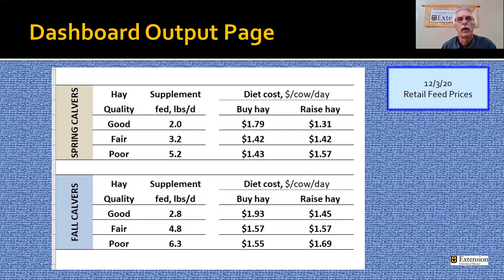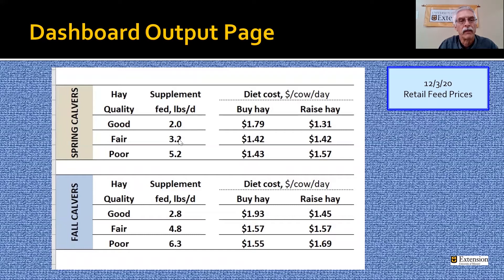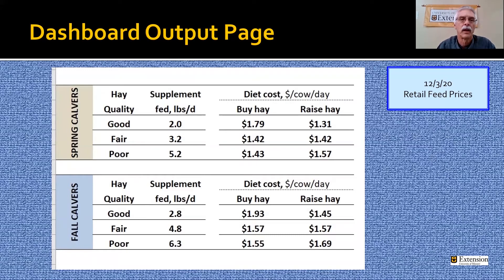This is the output page, and this is what we're really looking at. First, let's look at spring calvers here on the top. The supplement fed per day is the median amount of those five, seven, or eight rations calculated. So because we have fair quality hay doesn't mean we feed exactly 3.2 pounds of supplement — that was the median of the supplements used. Your situation may be different, but again, this is a planning tool.